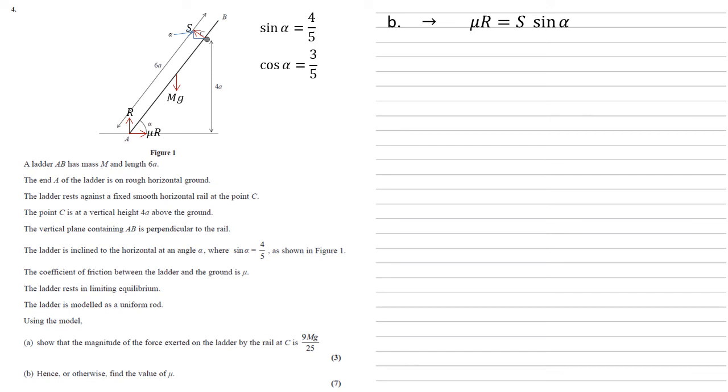So we've got mu R equals S sine alpha, replacing S with what we know it is, the 9MG over 25, replacing sine alpha with 4 fifths we then get 36MG over 125.